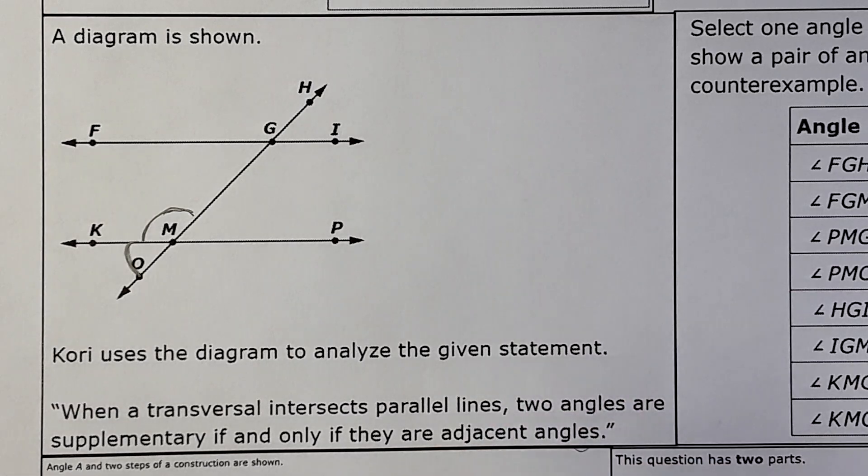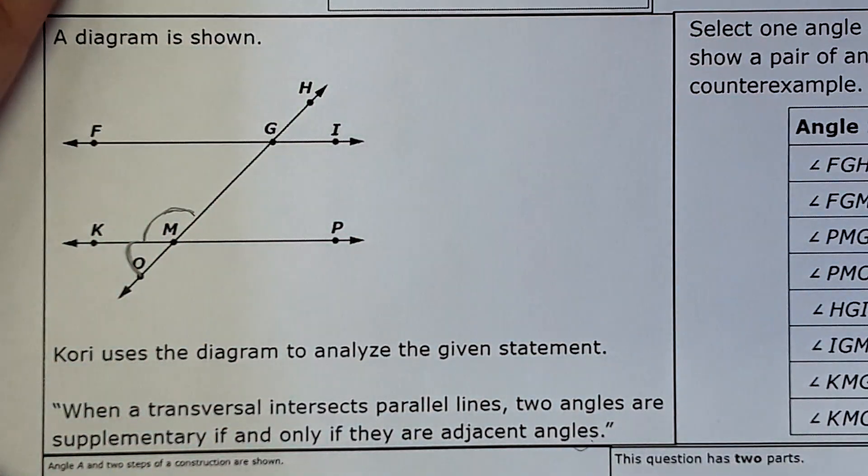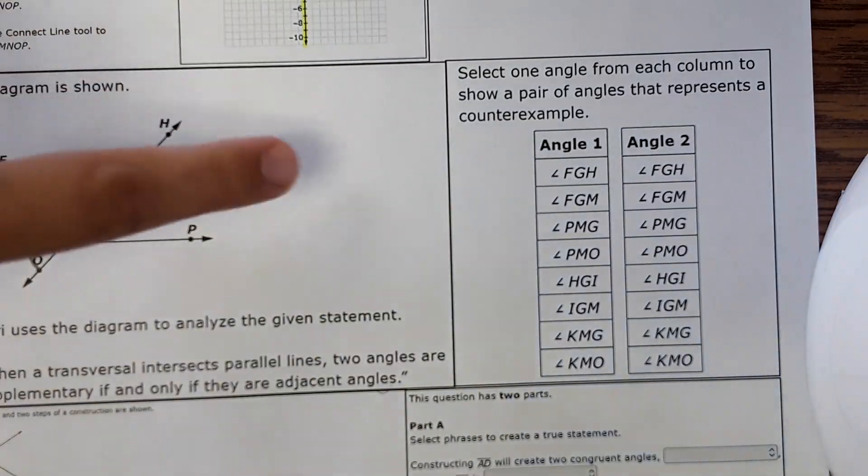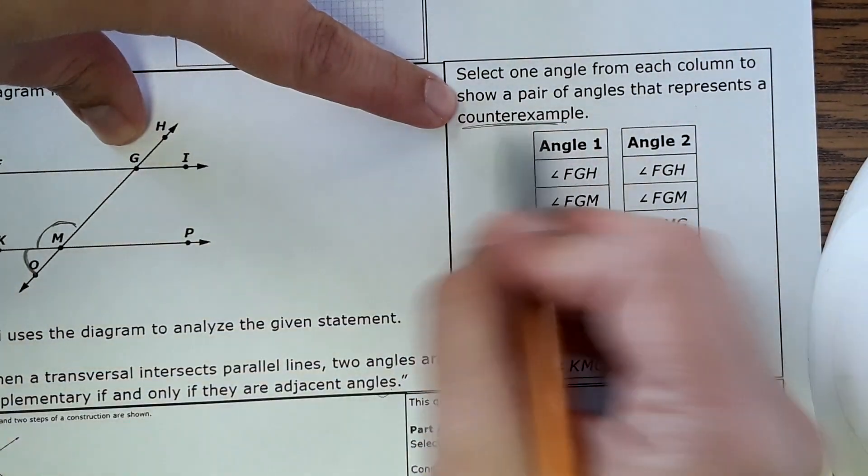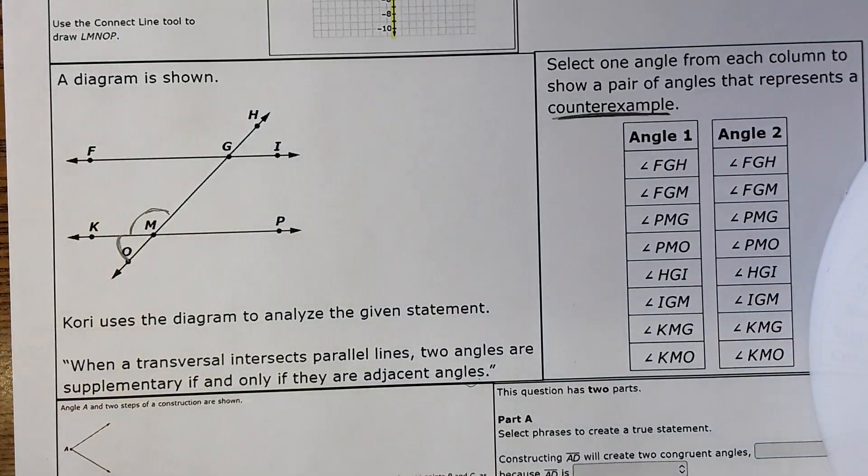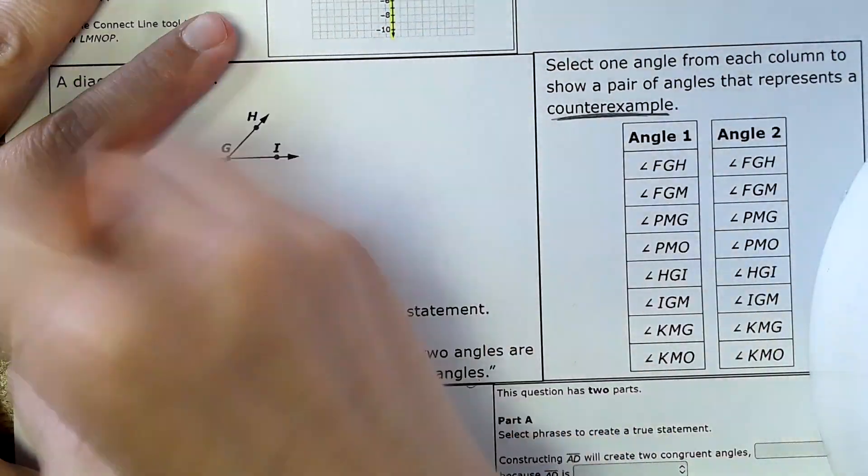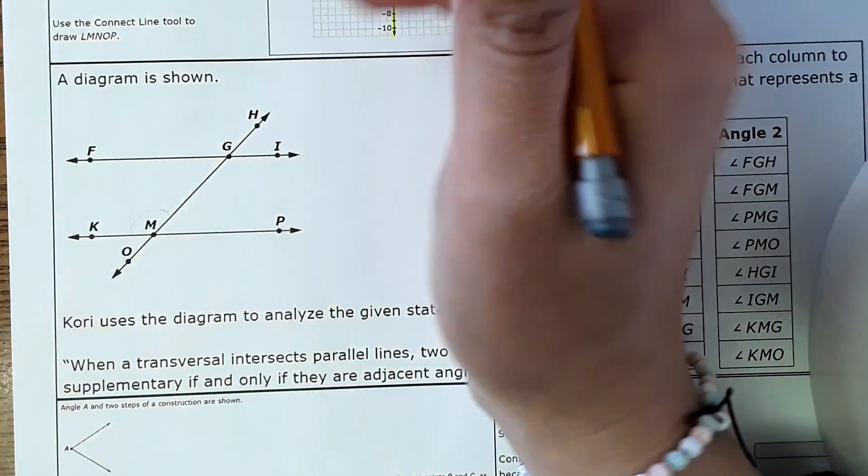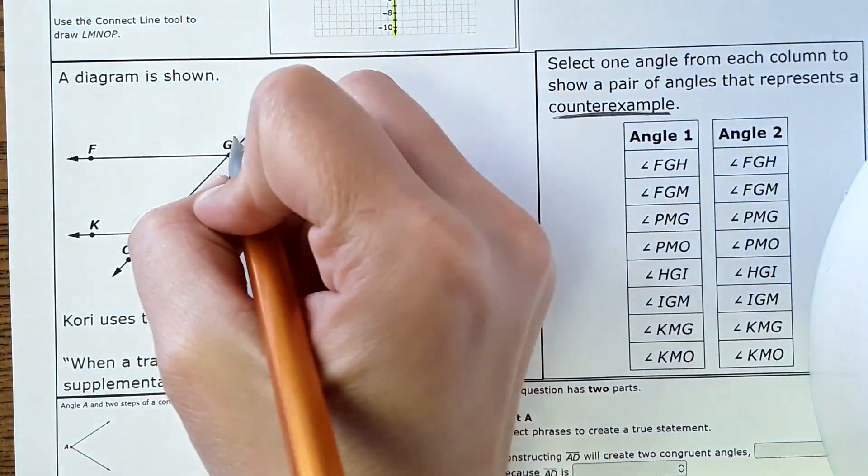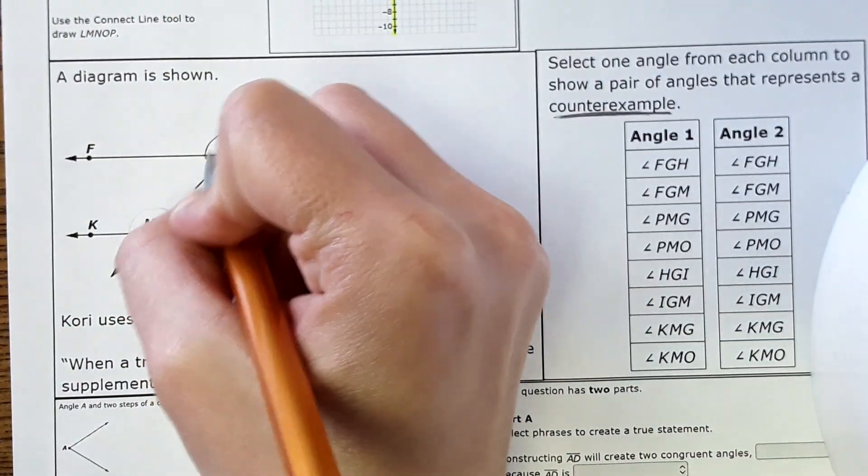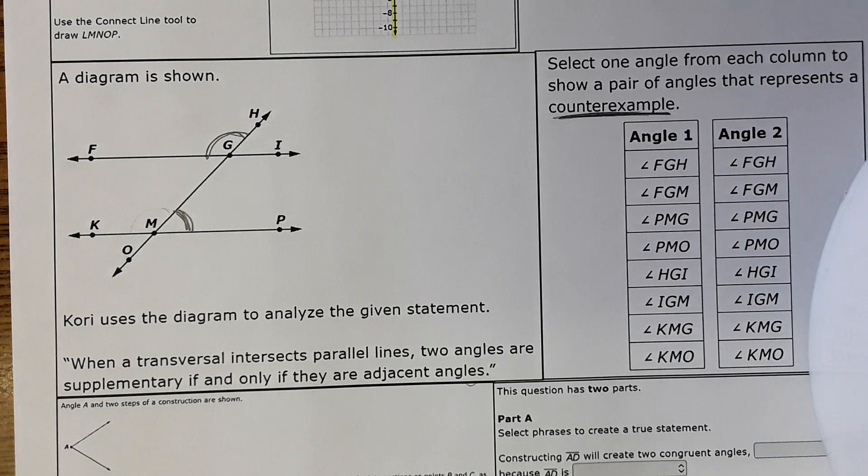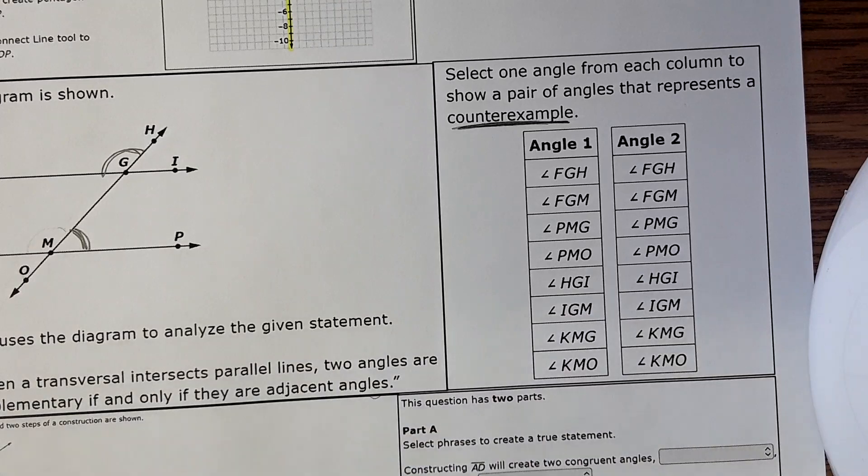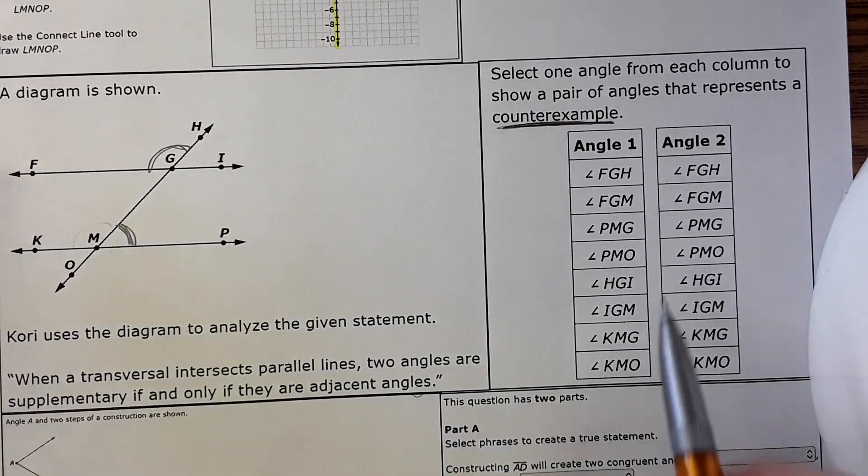It says select one angle from each column to show a pair of angles that represents a counterexample. They want you to prove that not just adjacent angles are supplementary in this diagram. We need to find an example of non-adjacent angles that are supplementary, like maybe this angle and this one - those two are supplementary and they're not adjacent.